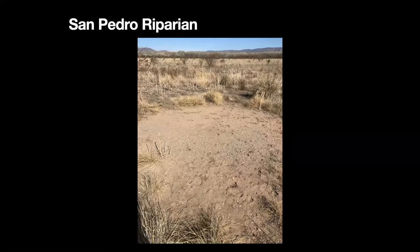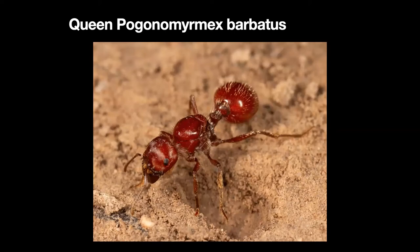Here is a harvester ant nest in the San Pedro along one of the regular trails. Some really interesting things about these: the queens — here's a queen ant, Pogonomyrmex barbatus — are known to live anywhere from 30 to 45 years. We think it's really great when we hear about the 17-year cicada, but that's nothing compared to many different species of ants.